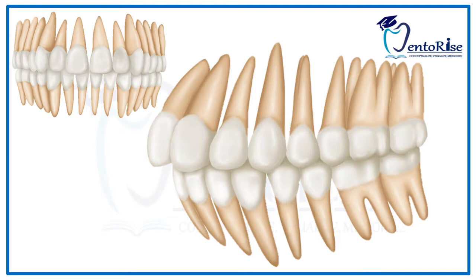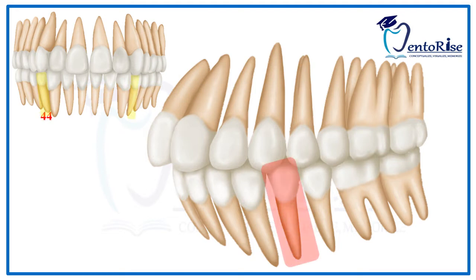The permanent mandibular 1st premolars are the 4th tooth from the median line. According to the FDI tooth notation system, the right permanent mandibular 1st premolar is numbered as 44 and the left permanent mandibular 1st premolar is numbered as 34.